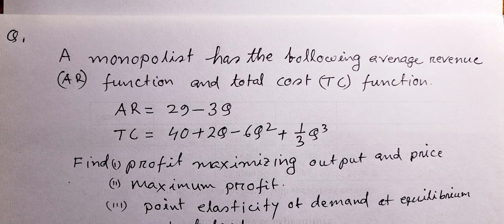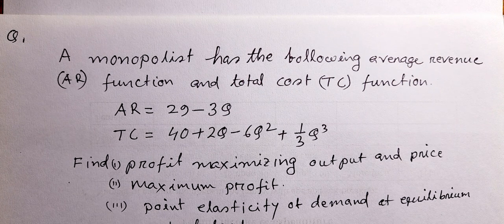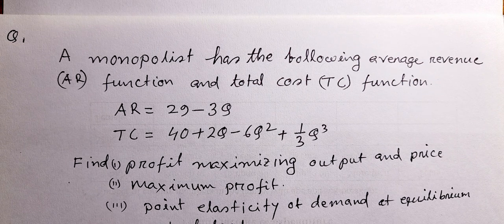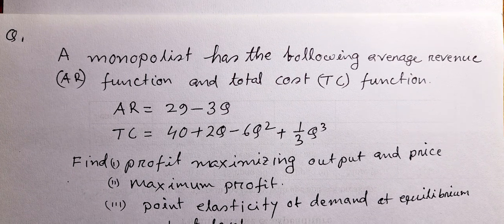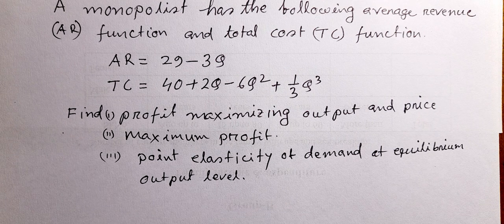Hello friends. In this video we explain the question: a monopolist has the following average revenue (AR) function and total cost (TC) function. AR is equal to 29 minus 3q, TC is equal to 40 plus 2q minus 6q² plus (1/3)q³, where q is output. Find the profit maximizing output and price, the maximum profit, and the point elasticity of demand at the equilibrium output level.